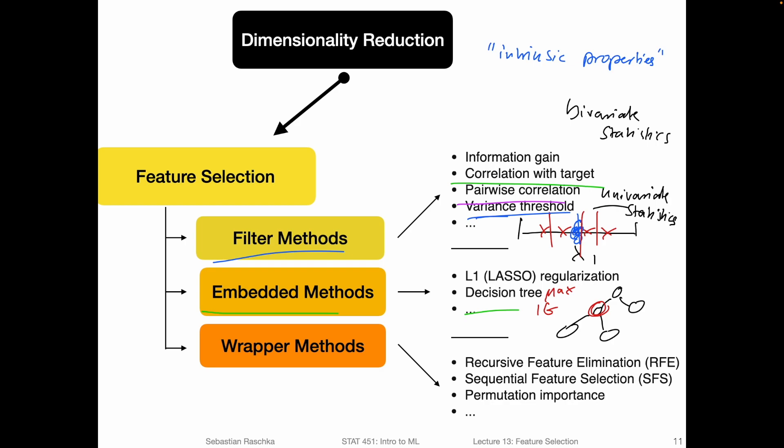Later, we will also see that we can actually use that and see which features are really not that useful in the data set. Typically, intuitively, the features that are used first in the decision tree, that are used higher up, are usually the more important ones, because they give us the most information gain.